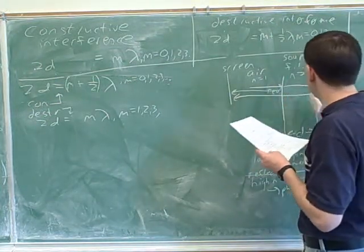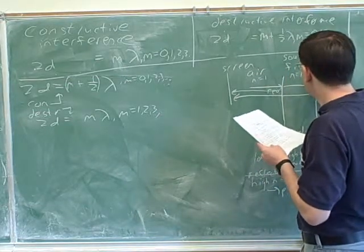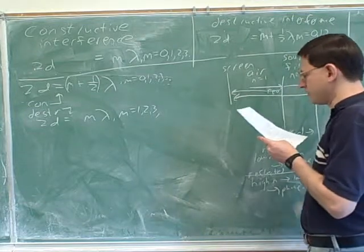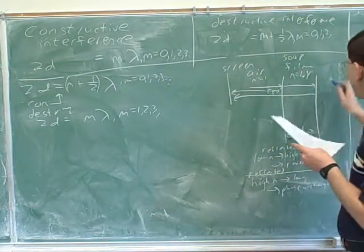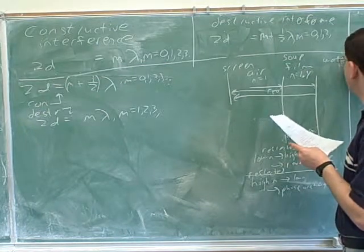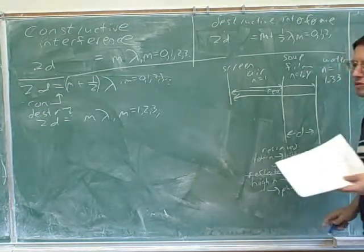And they told us that the n for the soap film is 1.4. And it starts in the air, which we know n equals 1. Then there's the soap film, and the final medium is water, which you might have memorized by now. n for water is 1.33.